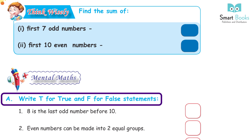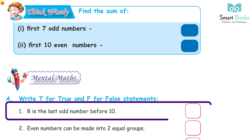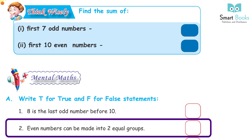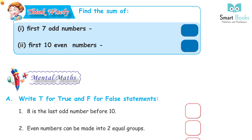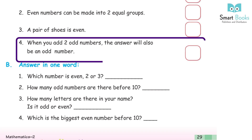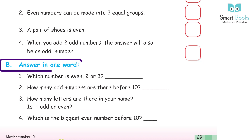Mental math section A: write T for true and F for false. One — eight is the last odd number before ten, answer: false. Two — even numbers can be made into two equal groups, answer: true. Three — a pair of shoes is even, answer: true. Four — when you add two odd numbers the answer will also be an odd number, answer: false.